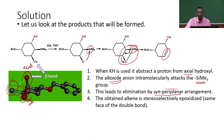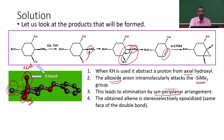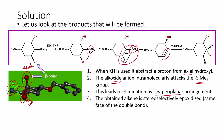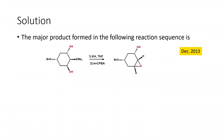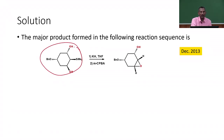Once the alkene is formed, MCPBA epoxidizes it. Since the hydroxyl unit points below the plane, it directs epoxidation from the top face, giving the corresponding epoxide product. Overall, the silyl ether treated with KH and MCPBA yields the epoxide derivative with defined stereochemistry.